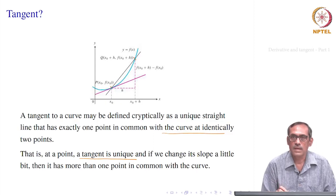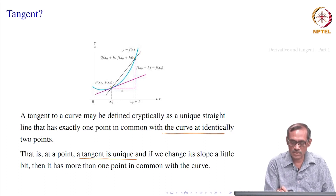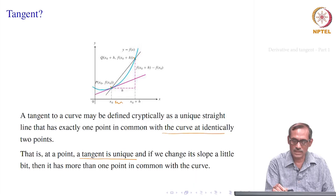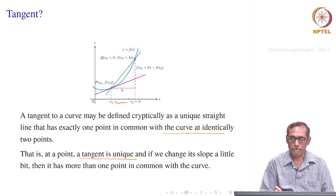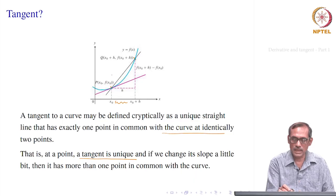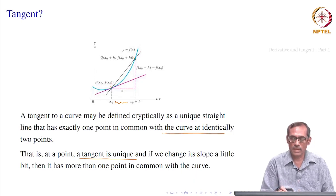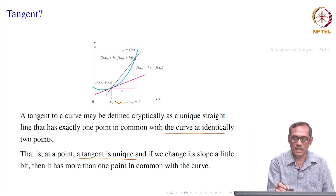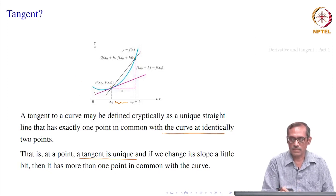Let the distance along the x-axis between the two points be h, so one is at x₀ and another is at x₀ + h. Point P has coordinates (x₀, f(x₀)) and Q has coordinates (x₀ + h, f(x₀ + h)). Note that h could be negative, so Q could be to the left of P — x₀ + h does not imply h is positive.